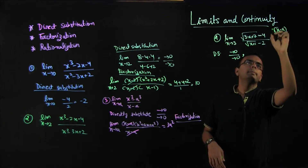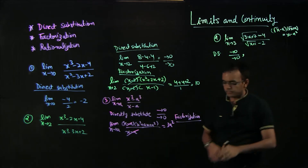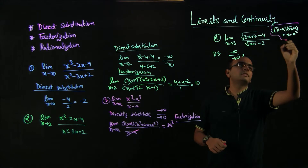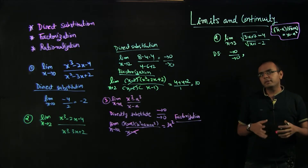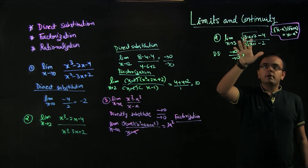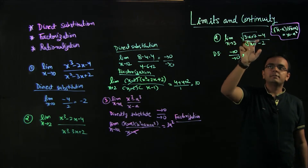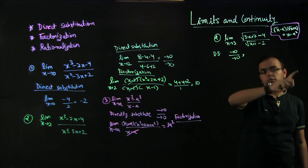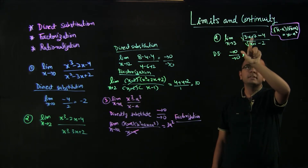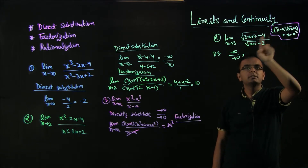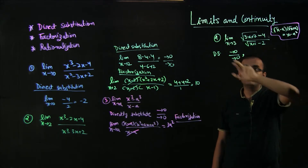Why rationalize? The term √(3x + 7) minus 4 is causing the problem. If we square it, 3x + 7 minus 16 becomes 3x minus 9, and similarly (√(x + 1) minus 2) squared gives x + 1 minus 4, which is x minus 3. So rationalizing will produce 3x minus 9 over x minus 3, and x minus 3 will cancel out — it was the factor causing the 0/0 problem.